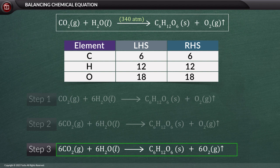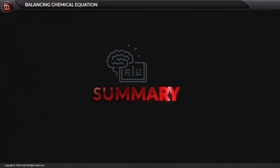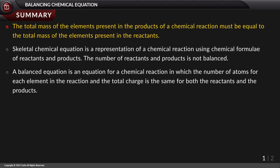Let us summarize what we have studied. The total mass of the elements present in the products of a chemical reaction must be equal to the total mass of the elements present in the reactants. A skeletal chemical equation is a representation of a chemical reaction using chemical formulae of reactants and products where the number of reactants and products is not balanced. A balanced equation is one in which the number of atoms for each element and the total charge is the same for both the reactants and the products.